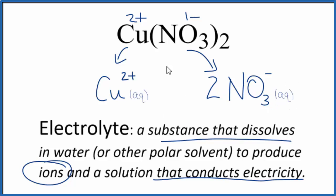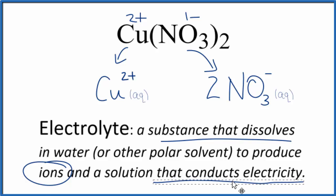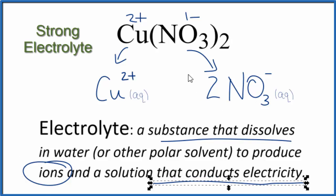Since we have these ions formed, copper 2 nitrate dissolves in water and produces ions that allow the solution to conduct electricity — this is considered an electrolyte. In fact, it's a strong electrolyte because copper 2 nitrate is soluble and breaks completely apart into its ions, conducting electricity very well.